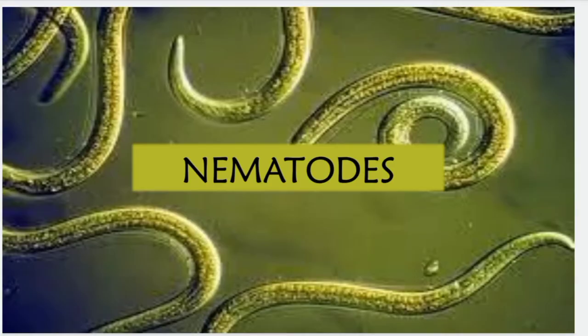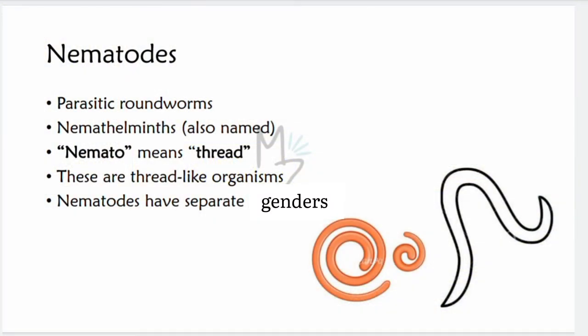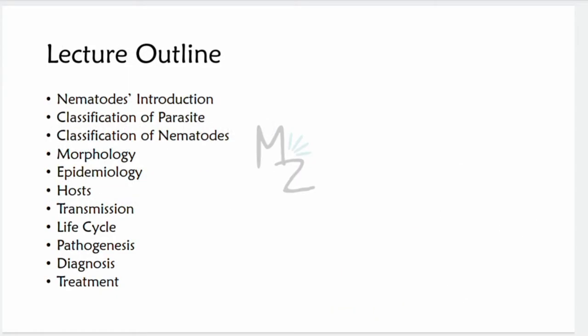Nematodes are parasitic roundworms, also known as nemathelminths. The word 'nemata' means thread, so these are thread-like organisms. Nematodes have separate genders — male and female — which we'll discuss in the morphology section. The lecture outline covers: introduction, classification of parasites, classification of nematodes, morphology, epidemiology, hosts, transmission, life cycle, pathogenesis, diagnosis, and treatment.